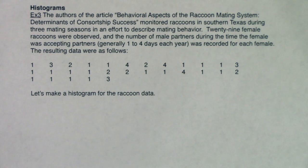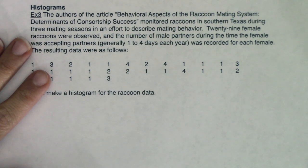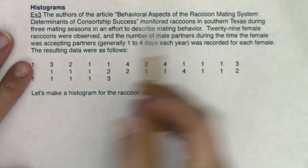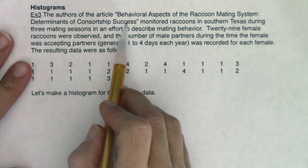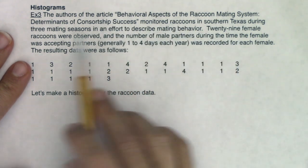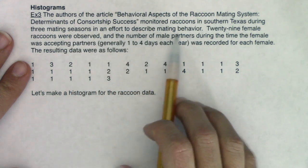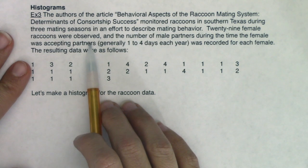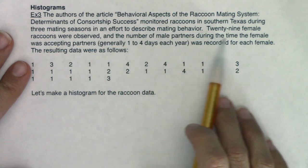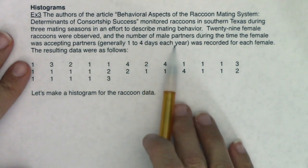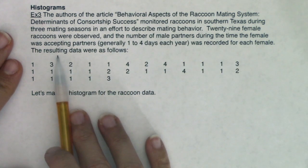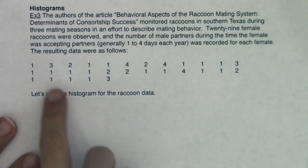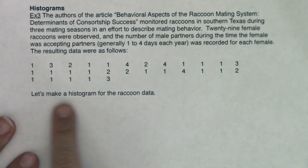Okay, we're going to revisit looking at histograms. When I read through this problem, like always, I want us to start to identify what is the variable. The authors of the article 'Behavioral Aspects of the Raccoon Mating System: Determinants of Consortship Success' monitored raccoons in southern Texas during three mating seasons to describe mating behavior. Twenty-nine female raccoons were observed and the number of male partners during which the time the female was accepting partners, generally one to four days each year, was recorded for each female.